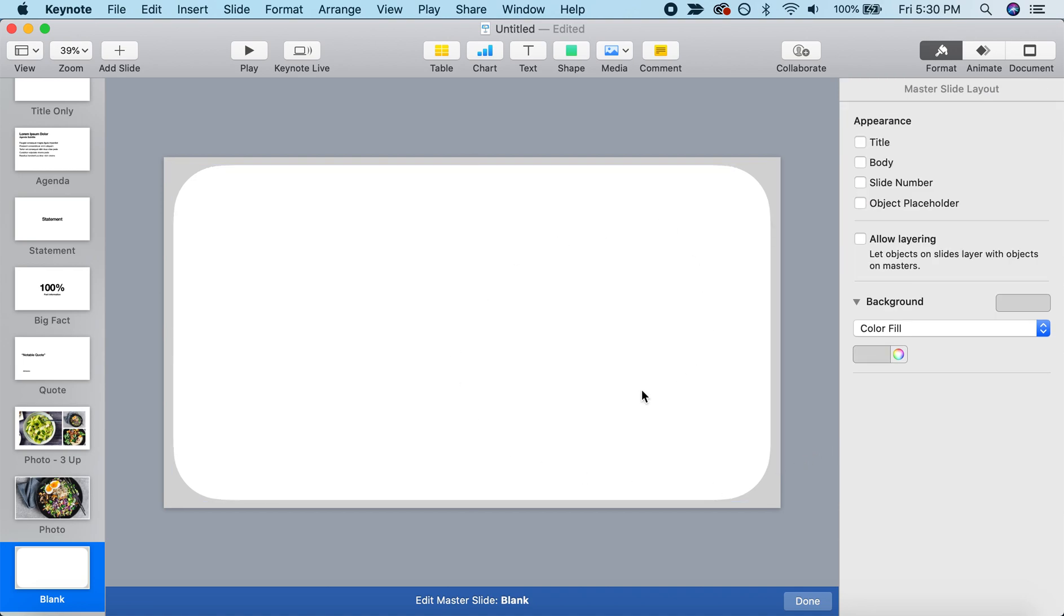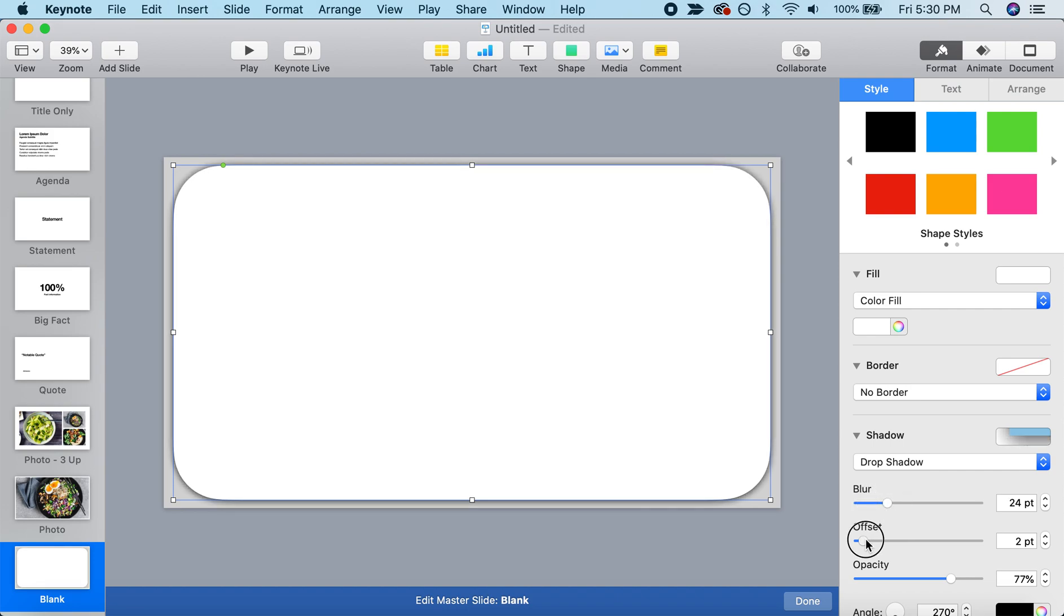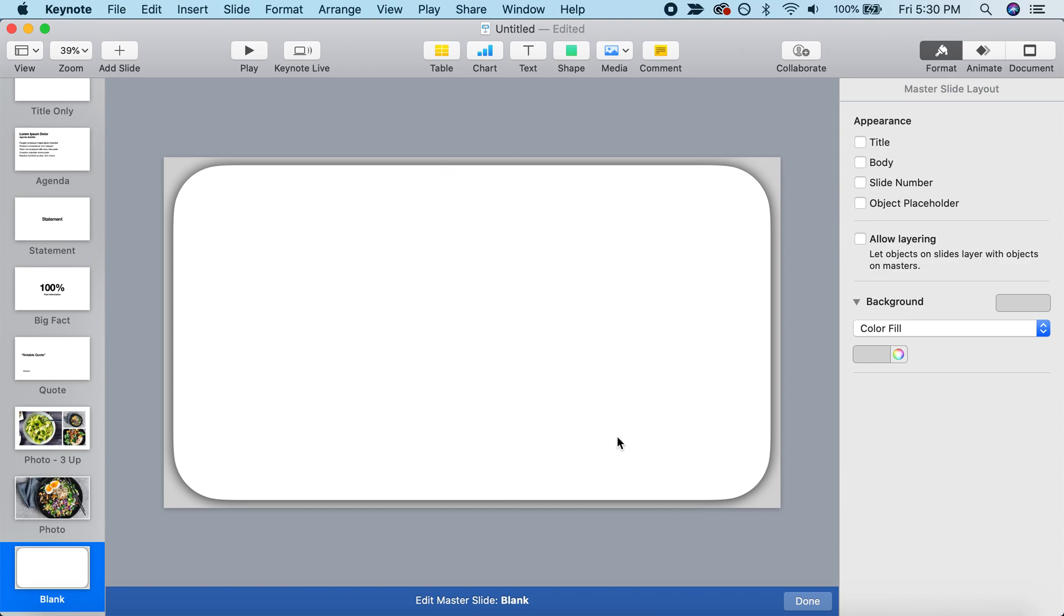Then I want to give this a three-dimensional pop. So I'm going to take that white rounded rectangle and adjust the shadow. So I'm going to pick one of these shadows. It's not super important which one you pick, but you just want to add a little bit of a shadow to it. Then you can drag some of these bars. So I'm going to up my opacity and up my blur. And let's up the blur a little bit more. That's just going to give me a nice kind of three-dimensional look as a background for my slides.